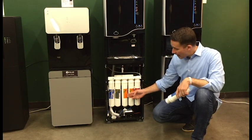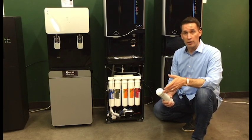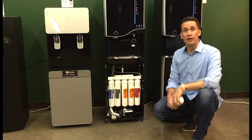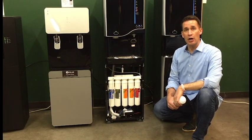This system you'll see has two of the RO membranes and that's just for higher capacity and more water production. The final filter is an additional carbon filter that improves the taste of the water after it passes through the RO membrane.